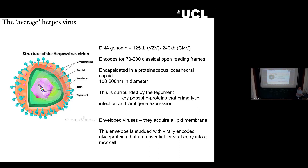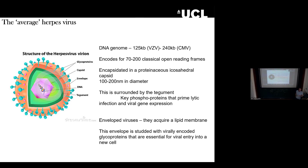They can have anywhere between 70 to 200 canonical open reading frames. CMV, for example, has around 200 predicted proteins. What that means is this virus — or this family of viruses — can really manipulate the host cell. This is partly to do with their ability to establish latency, and some of these genes contribute to the ability to establish latency and be persistent in a host.